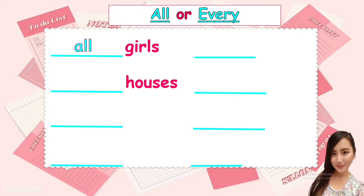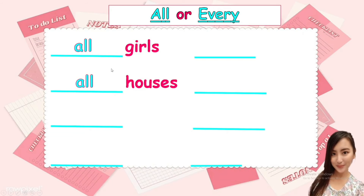Next. Houses. Is it singular or plural? It's plural. How can you say that it's plural? Because it has an S at the end. Houses. If it's only one, no S: house. But if there are many or if it's plural, we put an S: houses. So are we going to use all or every? The answer is all. All houses. We use all for plural nouns.